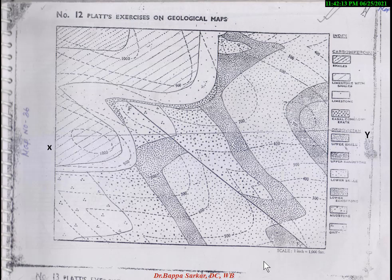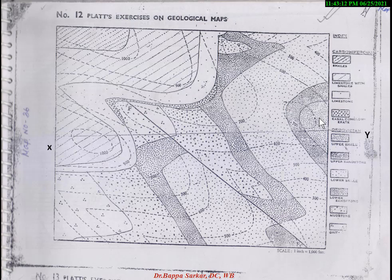Before preparing the geological section, you need to study the index of this map. You can see the index shows the Carboniferous era with four beds — shale, limestone, and conglomerate. Under the Ordovician era there are six beds. So these are the beds: one, two, three, four under Carboniferous, and one, two, three, four, five, six under Ordovician.